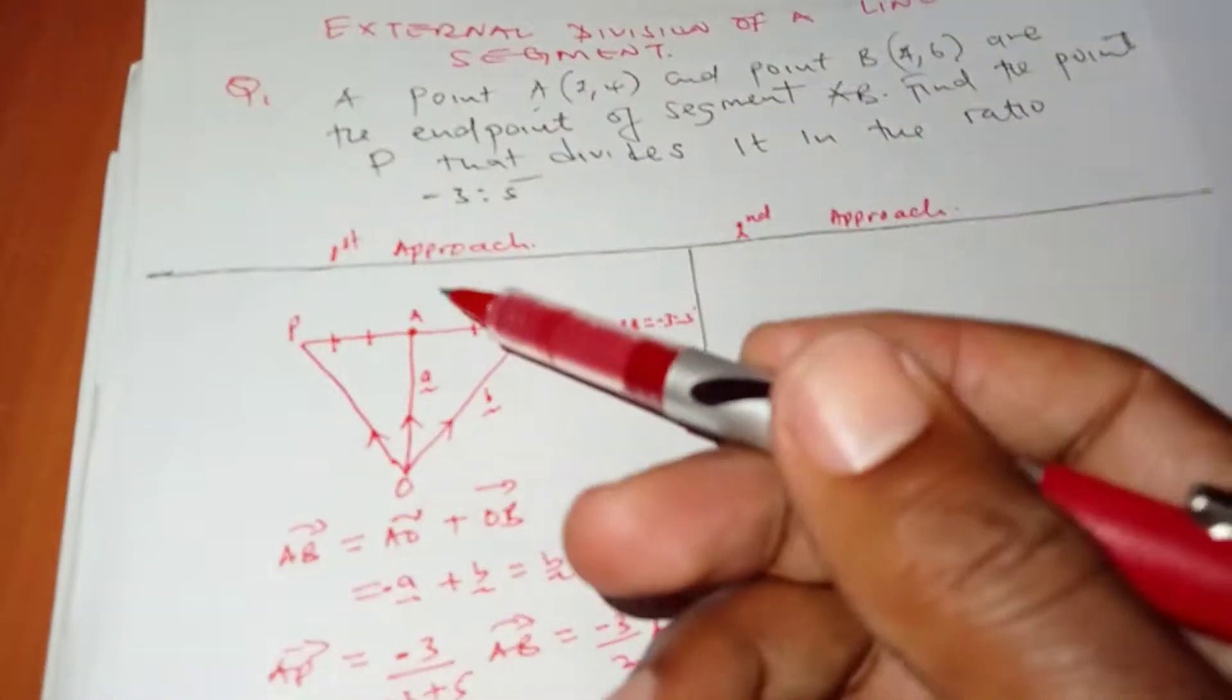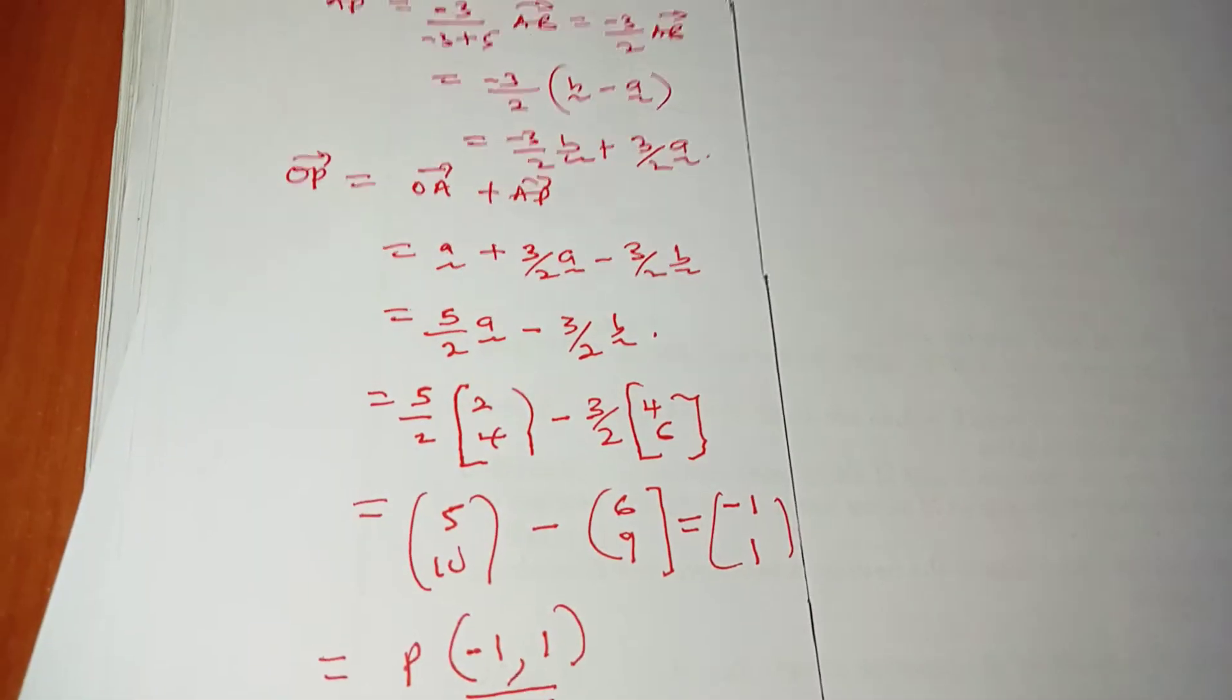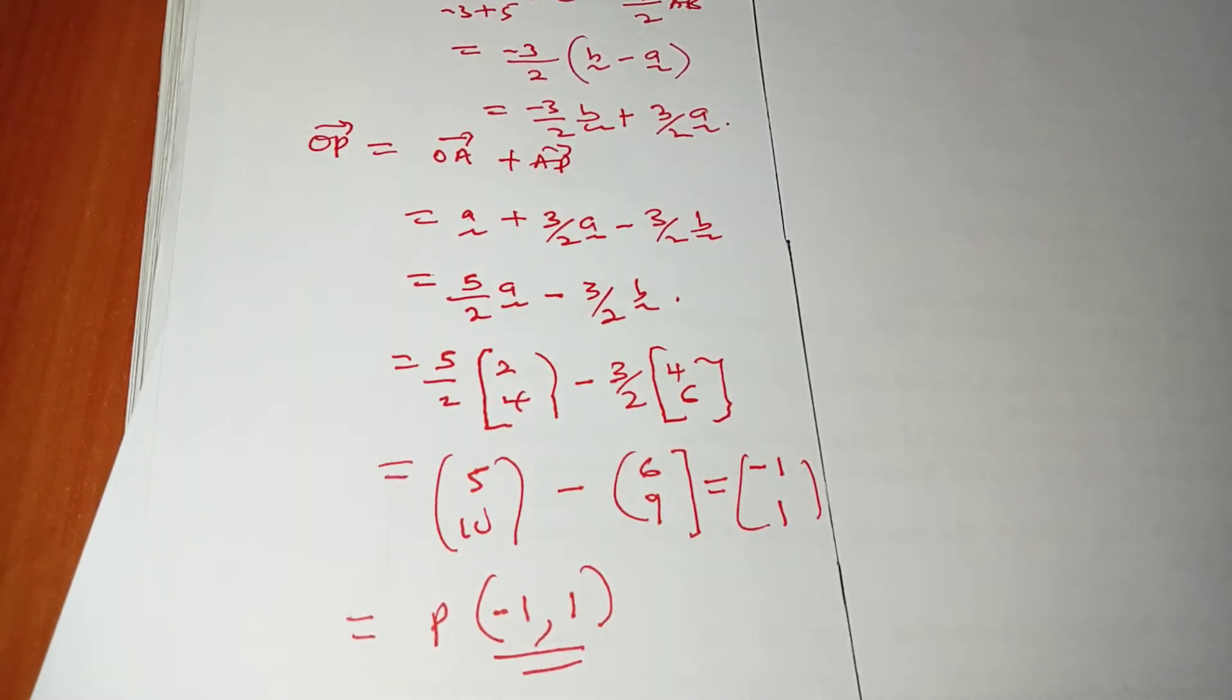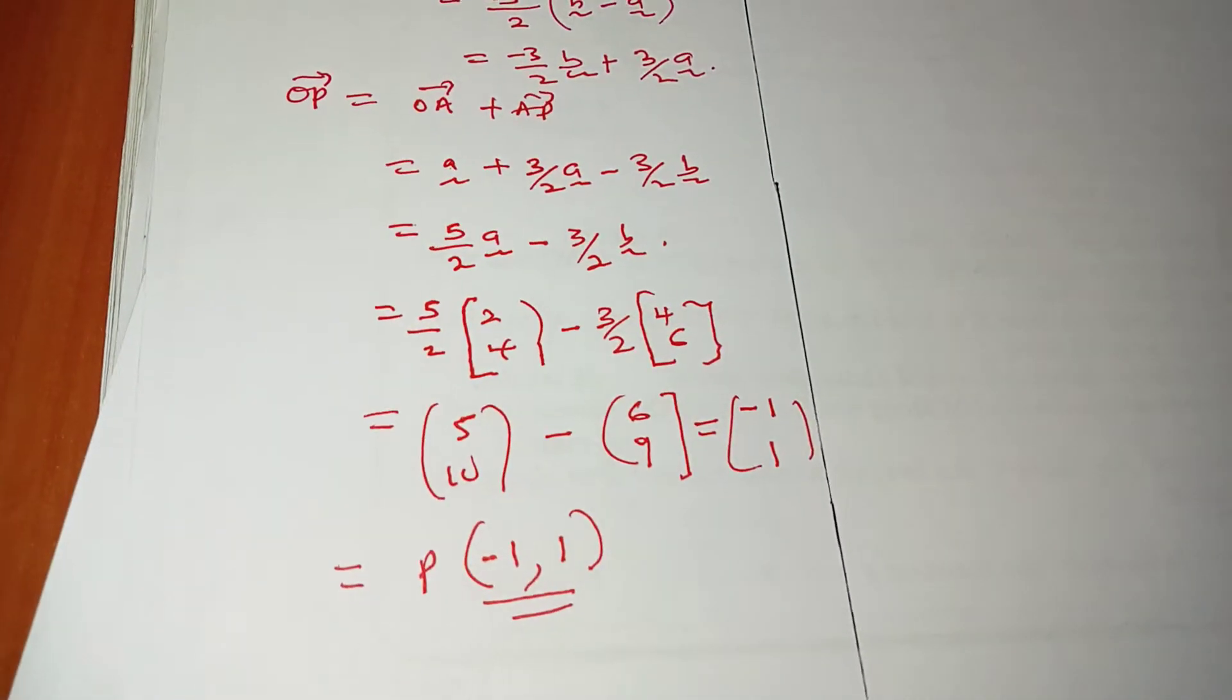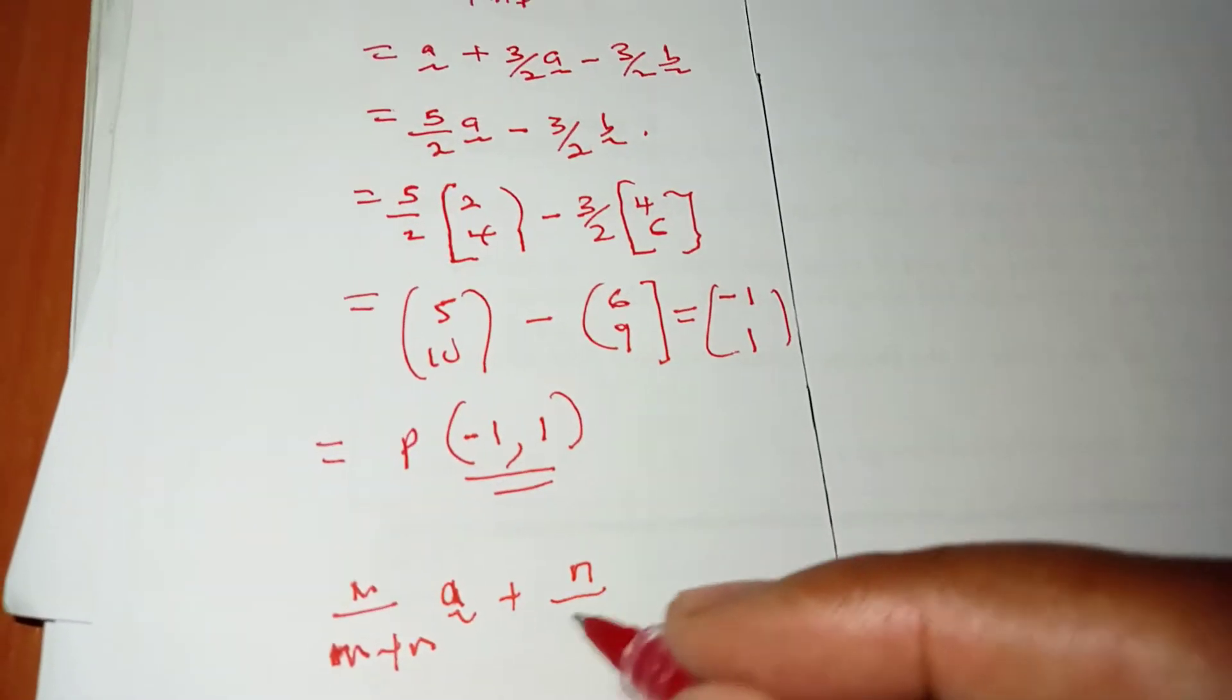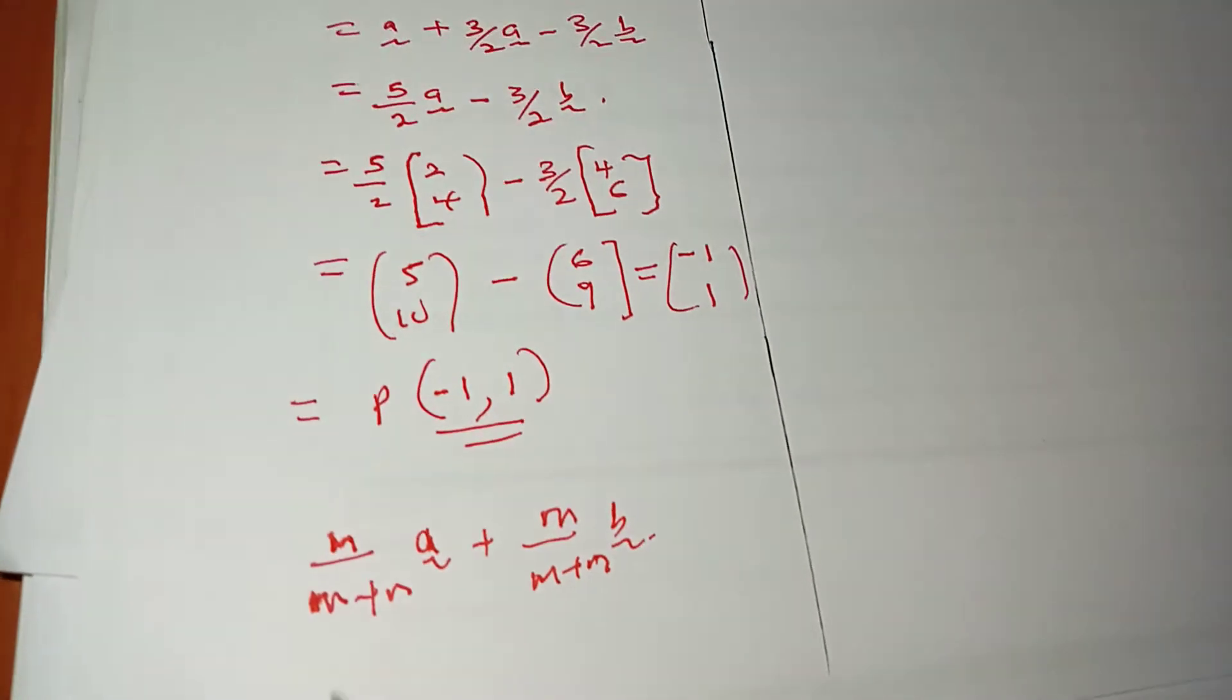My second approach is - and by the way, before I move to the second approach, this one is more or less the ratio theorem, which says that if you have a line segment and a point divides it externally or internally in whatever ratio, the formula is N/(M+N)·A vector plus M/(M+N)·B vector. That is the ratio theorem.